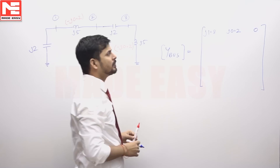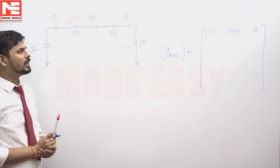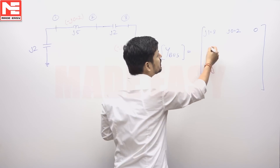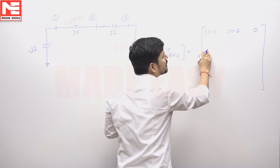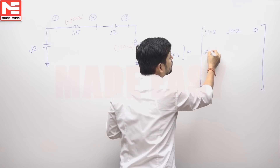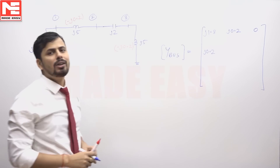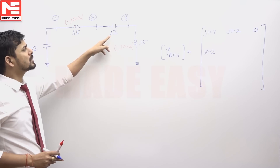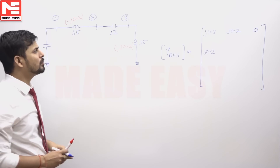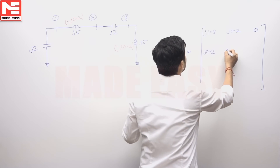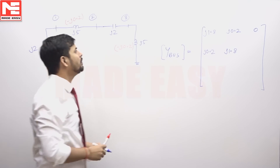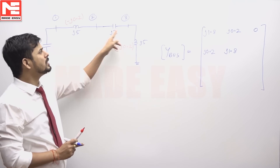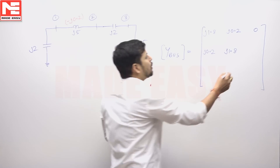We know that the Y-bus matrix is a symmetric matrix. From the property of symmetry, the second row first column entry y21 will be j0.2. Similarly, the second diagonal entry y22 will be the sum of admittances connected to bus number 2, which will be j1.8. The second row third column entry y23 is the negative of the admittance between bus number 2 and 3, which is minus j2.